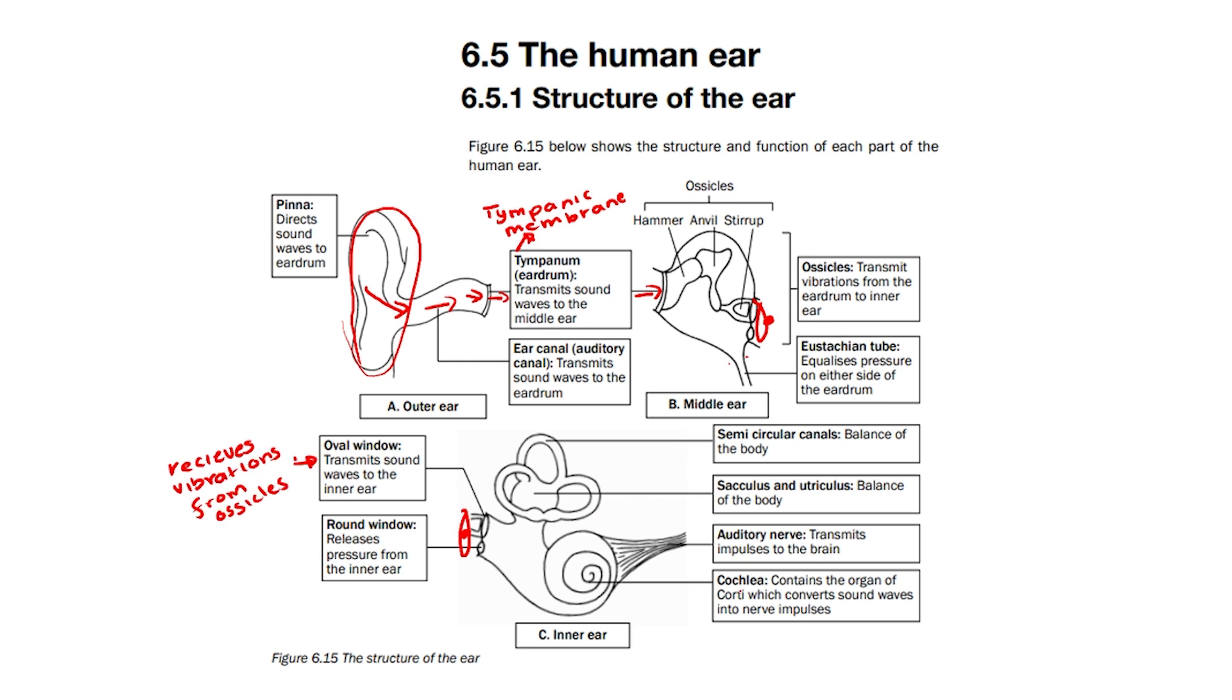From the oval window, we then get the cochlea, which contains the organ of Corti, which converts sound waves into nerve impulses. The nerve impulses are then transmitted along the auditory nerve to the brain, where they are interpreted.